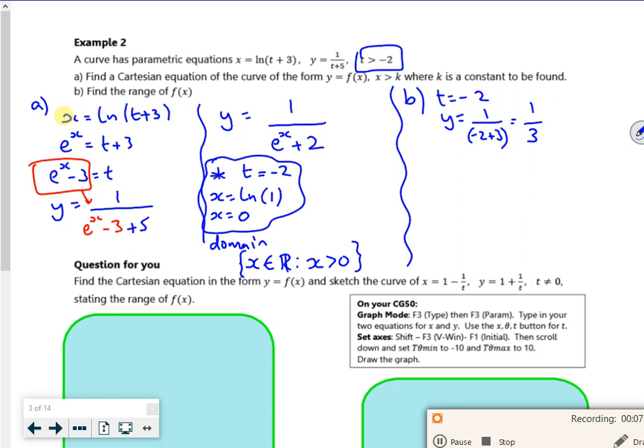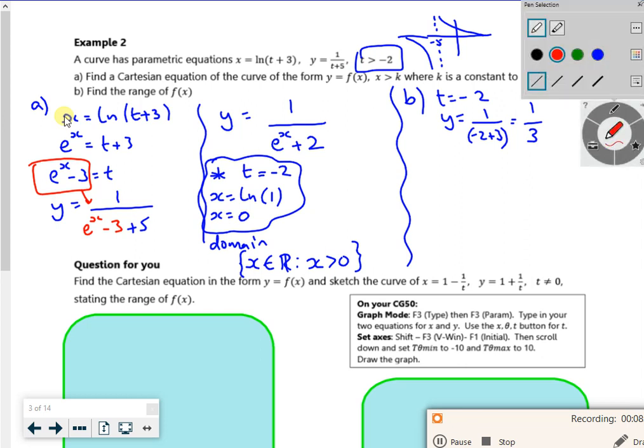I've got to think about what the graph actually looks like. The 1 over (t+5) graph has an asymptote at minus 5, and it looks like that. I'm looking at bigger than minus 2, so I'm looking from here onwards, so this is t bigger than minus 2. That's the third, that's where the third comes from.